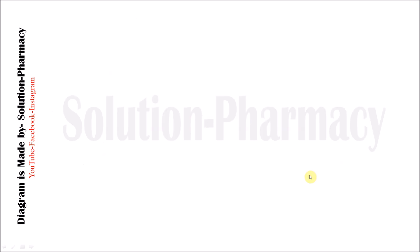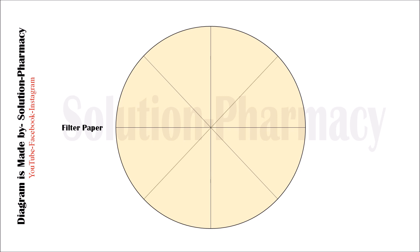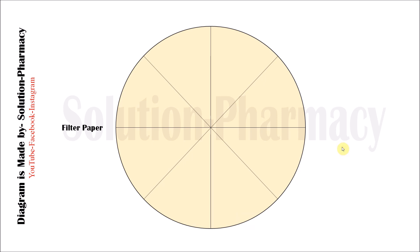First of all, take a clean and dry filter paper and mark the filter paper with a pencil to make different sections, as you can see in the video. You can skip this step, but if you mark the sections it will be easy to visualize and record the time. Next, number each section of the filter paper from any side. Here we are numbering anti-clockwise as 1, 2, 3, 4, 5, 6, 7, and 8.